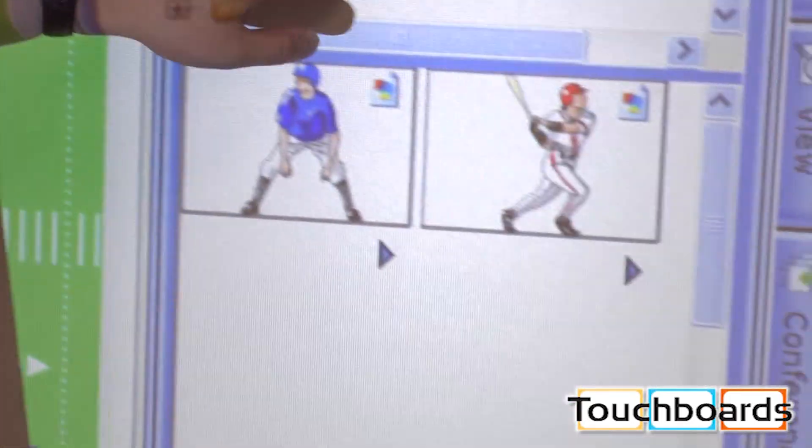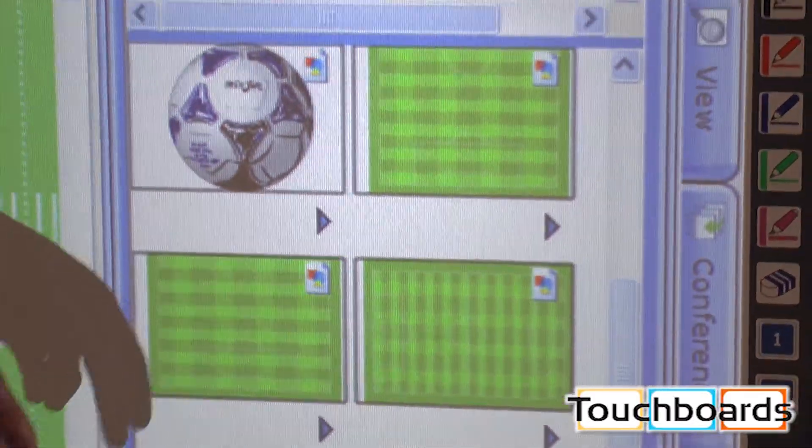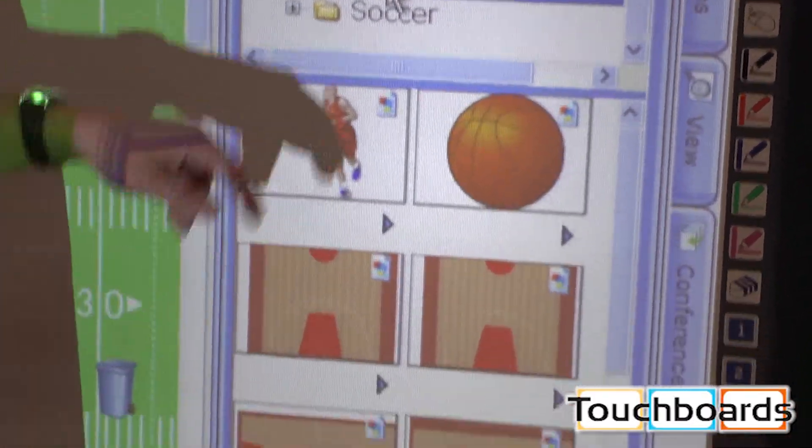You have baseball, basketball, soccer fields, basketball court, baseball diamonds.